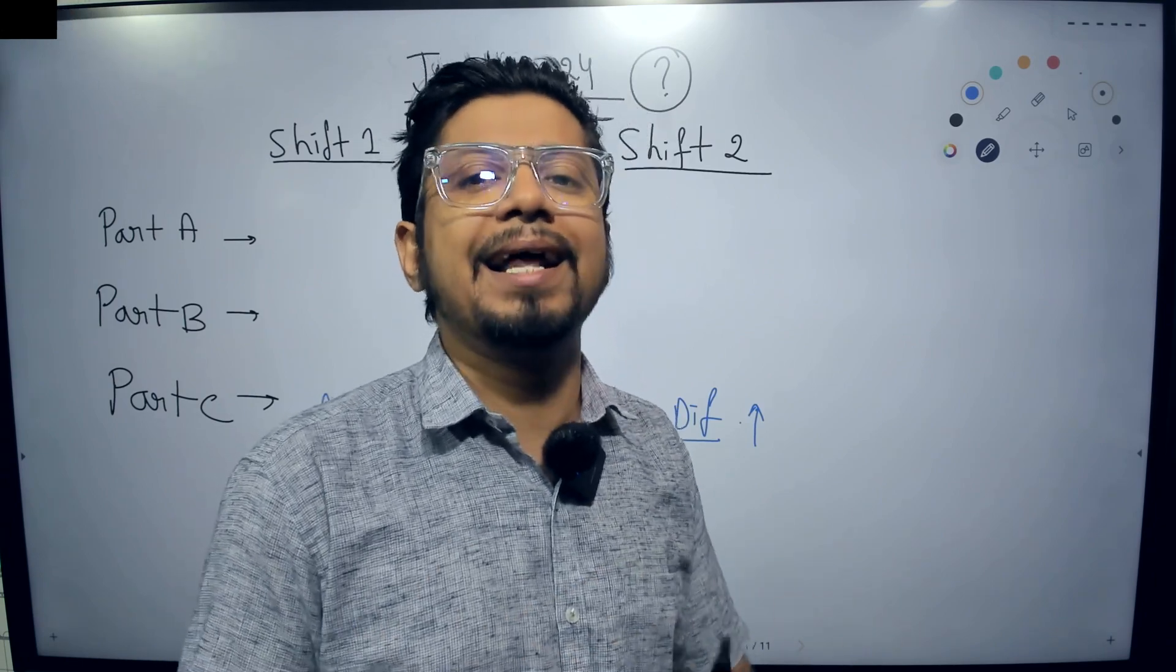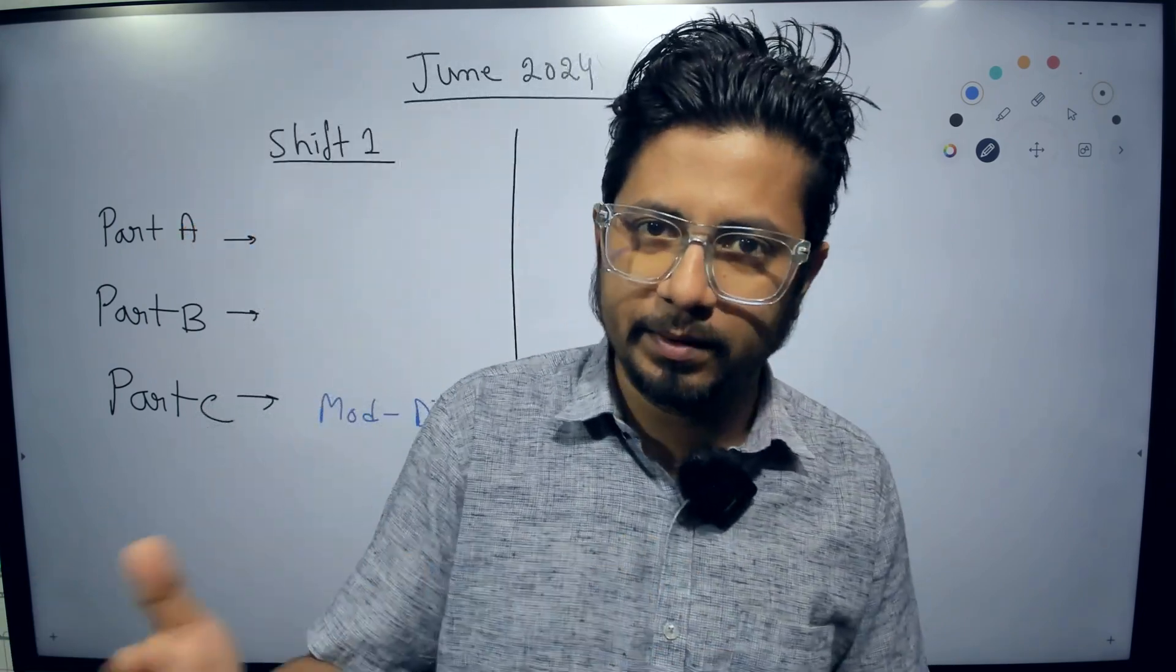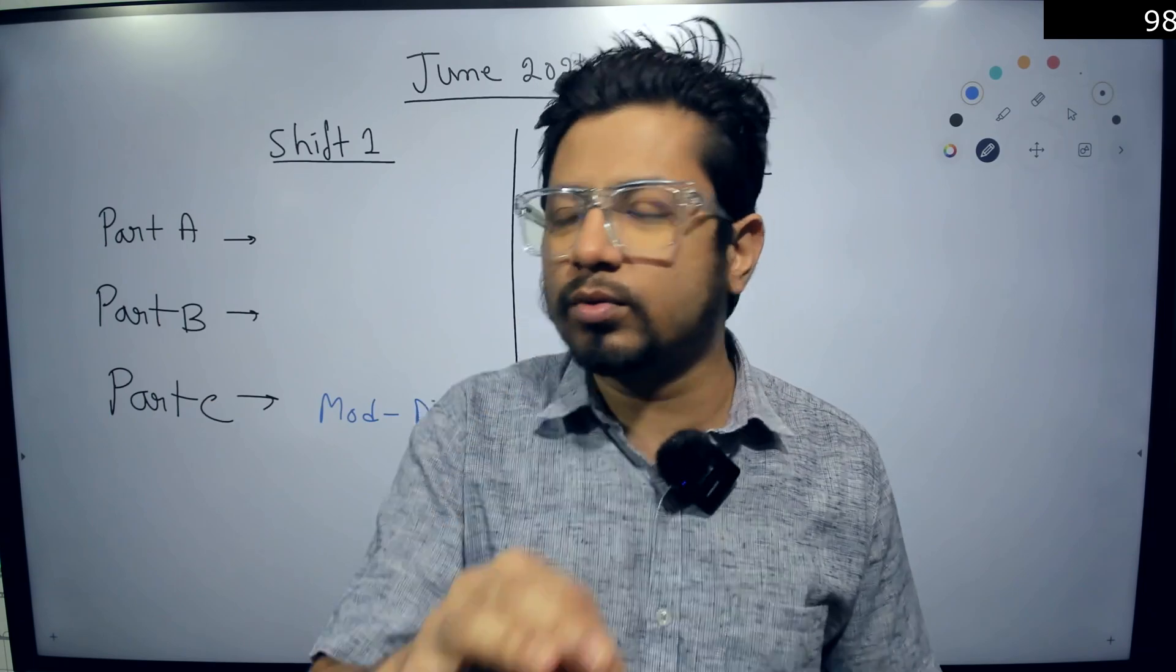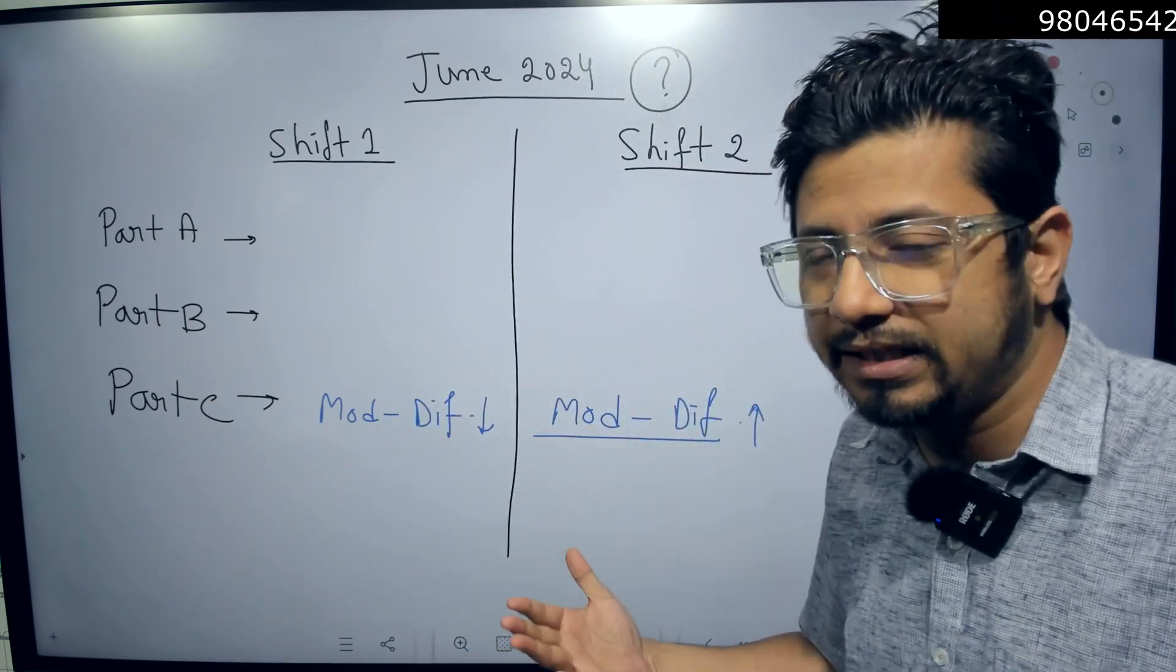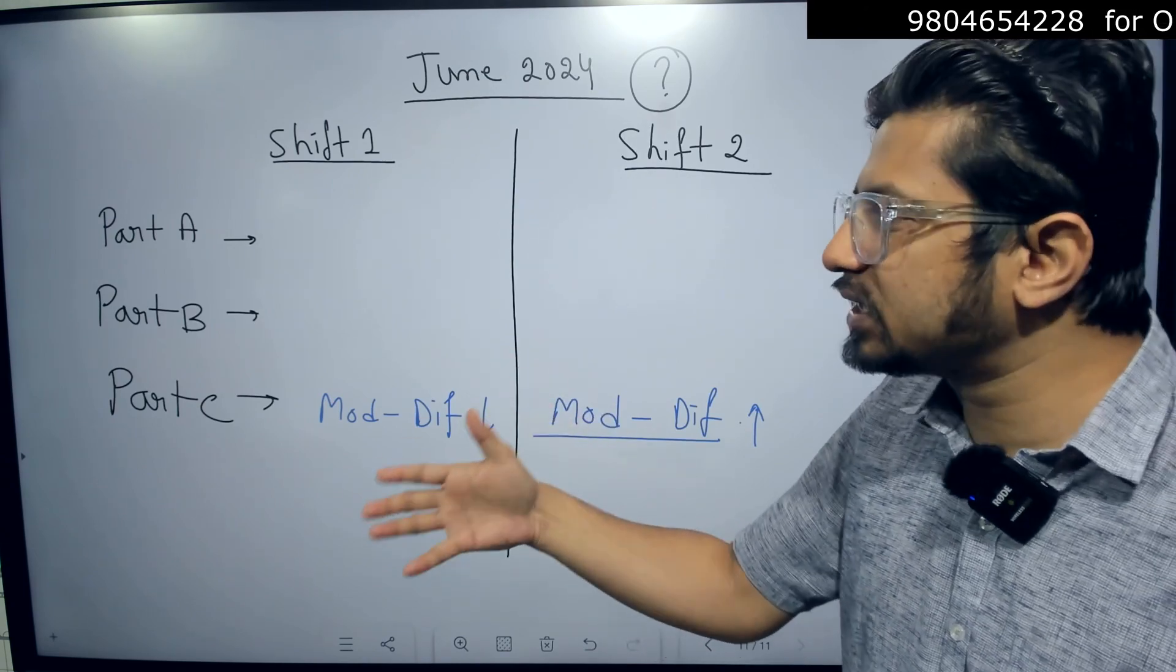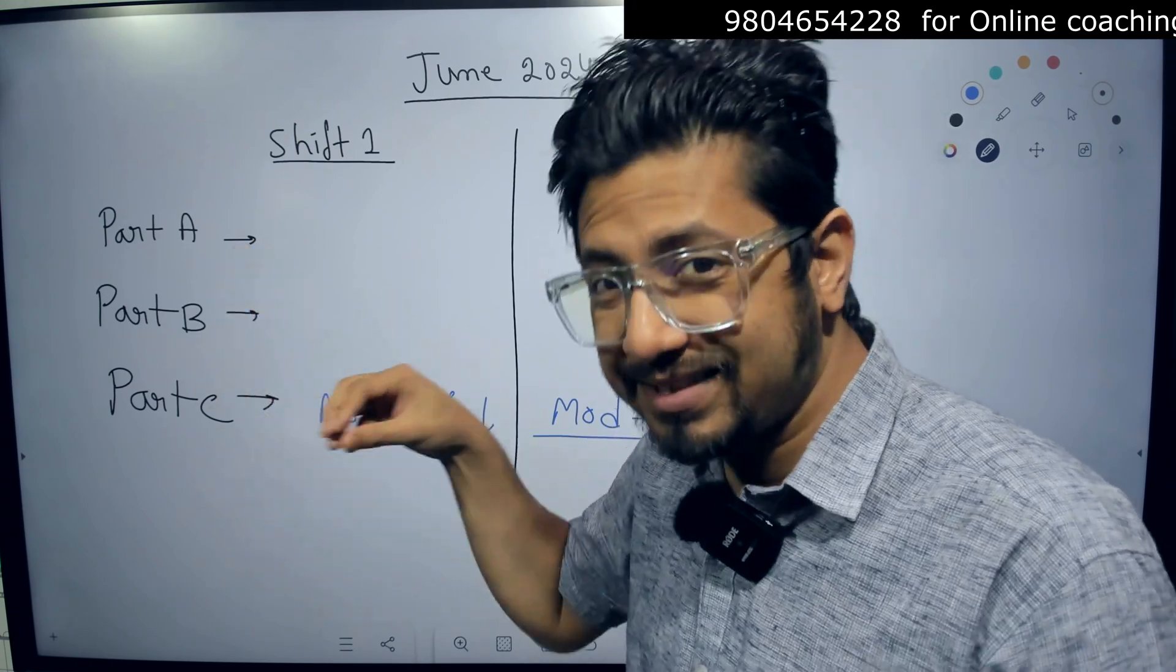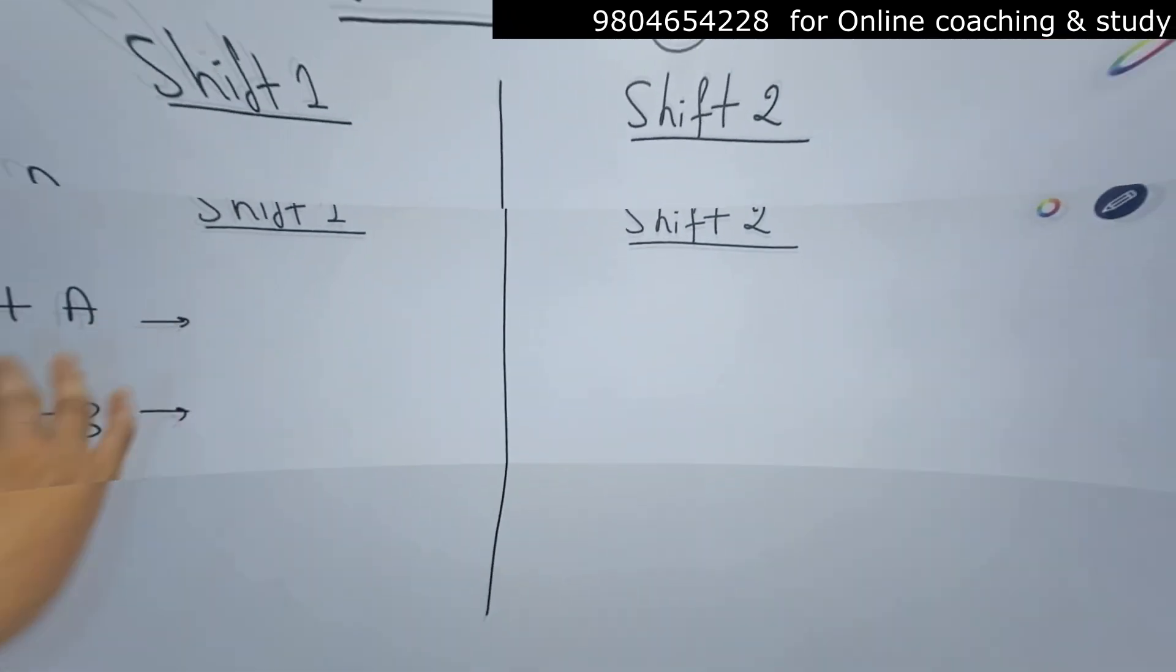It is moderate to difficult compared to previous years' questions, most students reported. Part C is a little difficult this time, and the questions are lengthy. The problem with lengthier questions in NTA-based CBT mode exam is that you need to scroll the Part C questions a lot, and it consumes a lot of time. So students don't get much time to solve Part A or Part B. Between three units, most students struggled to finish all three parts this time.